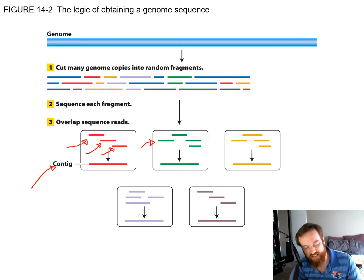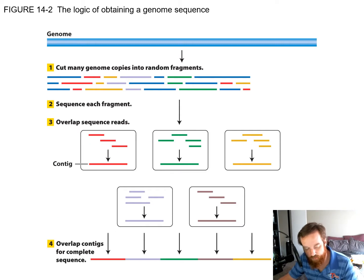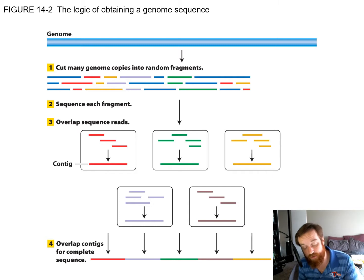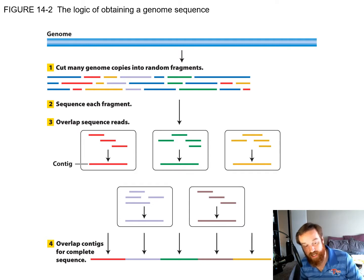We build these contigs into a kind of scaffolding. In this example, we end up with five contigs. We then look for overlaps at the ends of those contigs, just like we did with individual sequences, and use overlapping sequences to build larger and larger sections until we get an entire chromosome. Once we have one chromosome, we repeat the process for each chromosome to assemble the entire genome.